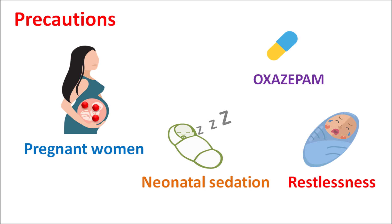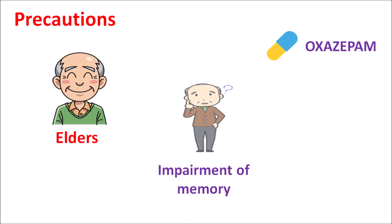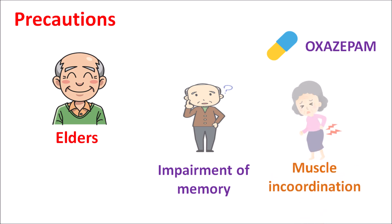The next precaution is in the elderly. Oxegepom should be carefully used in elders because it can produce impairment of memory resulting in amnesia, loss of memory, confusion, and altered mental state. This drug can also produce motor disturbances resulting in muscle incoordination, and hypotension with decreased blood pressure. In elders aged greater than 65 years, this drug should be carefully used.